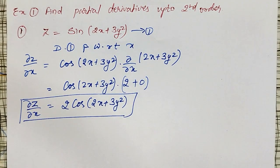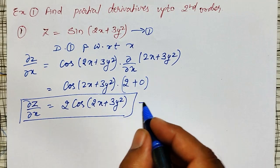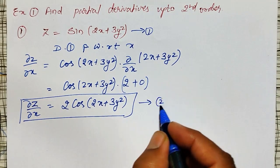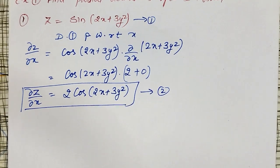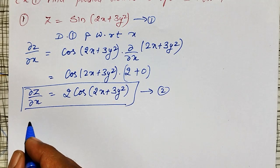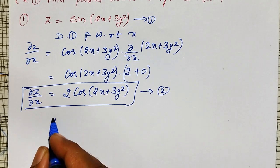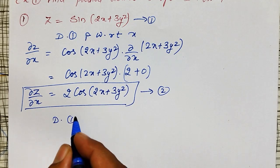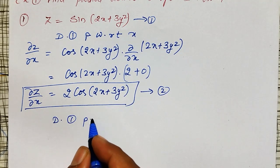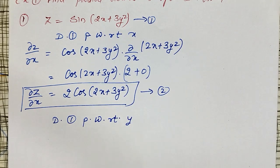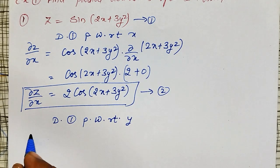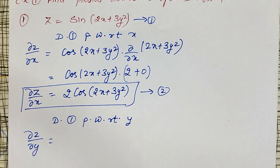Let me call this equation number two. Now one more first-order partial derivative exists — differentiating equation one partially with respect to y. The notation is ∂z/∂y.